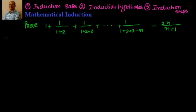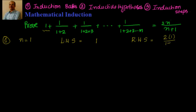Step 1: We have to prove it's true for n=1. On the left-hand side with n=1, there is only one term, so LHS = 1. RHS = 2×1/(1+1) = 2/2 = 1. So LHS = RHS, and we have proven the base case — the statement works for n=1.